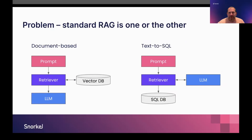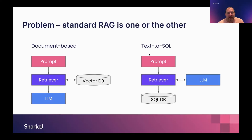We're typically in a one-or-the-other situation. The document-based pipeline takes a prompt to a retriever, uses an embedding of that prompt to find relevant information in a vector database, and passes it to the LLM to generate a response. On the other side, early text-to-SQL solutions take a prompt, ask the underlying LLM to generate a SQL query, run that query against the database, and return the results. In my experience, implementations tend to end up on one side or the other.